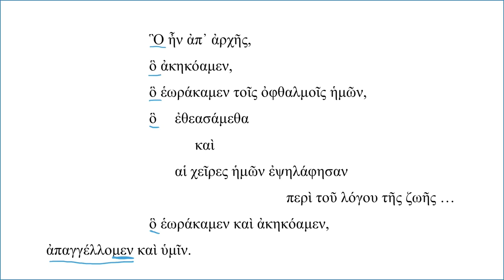Remember, normal Greek word order is conjunction, verb, subject, direct object — obviously that's altered a lot for emphasis or other reasons. But when you don't get that normal structure, and especially if you have this long introduction with no clue where the verb is, what you have to do is go find the verb, look at its person and number, see if there's something in the nominative for the subject, see if there's a direct object. That gives you the basic structure, and then you can put the pieces together.